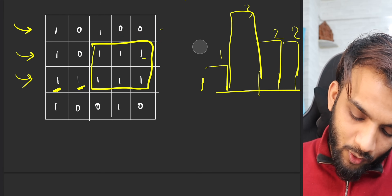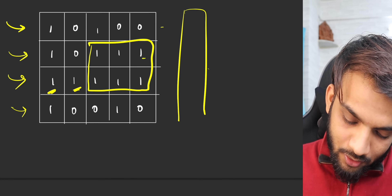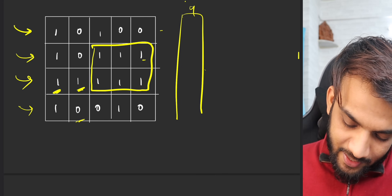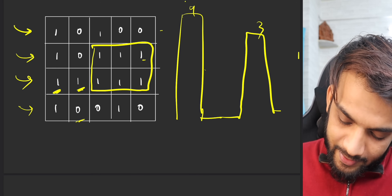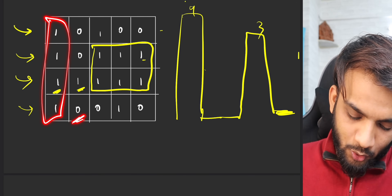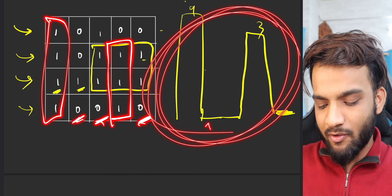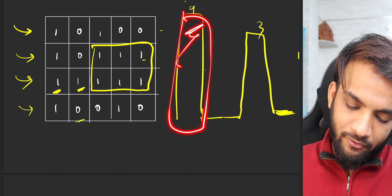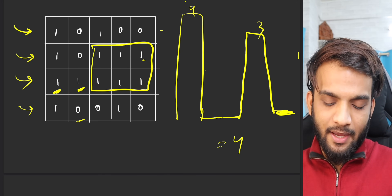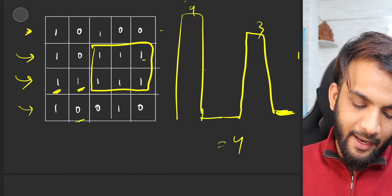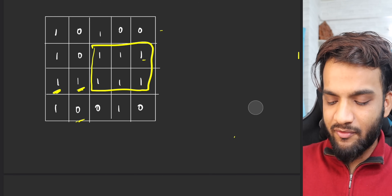Moving to the last row, the heights are 4, 0, 0, 3, 0. I form another histogram and the largest rectangle is of length four. But the maximum across all rows was six. So the answer is six. For every row, if someone gives me the histogram, I can solve the problem.